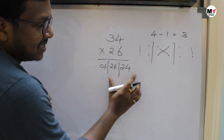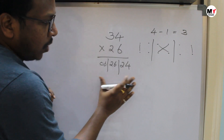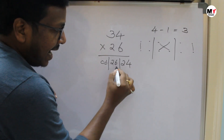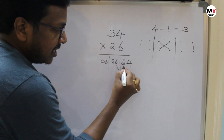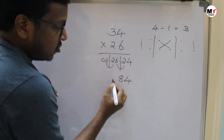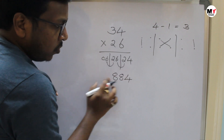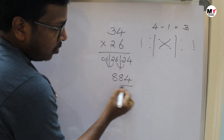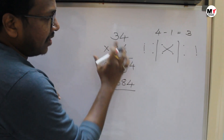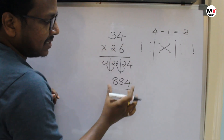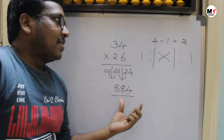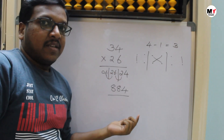Now we got three parts as the answer. Now balance this one. The last digit — keep 4 as it is. Add these two digits: 6 plus 2 is 8. And add these two digits: 6 plus 2 is 8. The leading zero — no need to write. So when we multiply 34 into 26, we got the answer 884. This is the double digit into double digit multiplication.